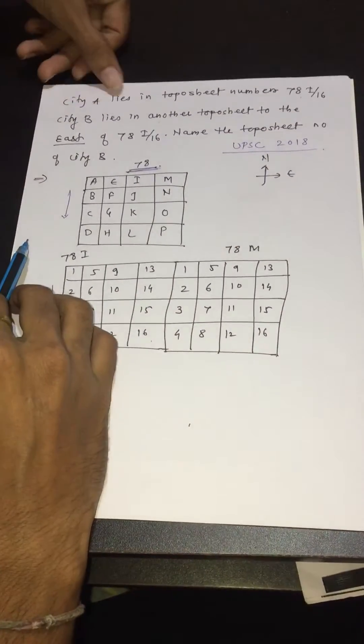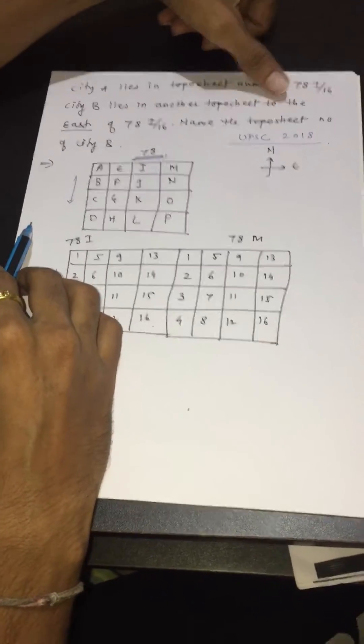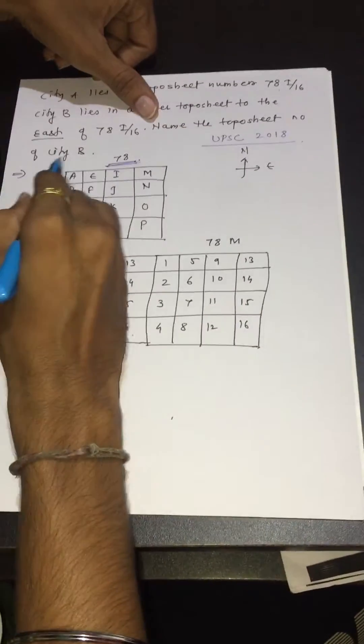Question is: City A lies in toposheet number 78 I by 16, City B lies in another toposheet to the east of 78 I by 16. Name the toposheet number of City B.